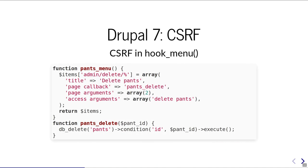We also have the same patterns for cross-site request forgery in Drupal 7. Routing is defined in hook_menu, and then you have some page callback which deletes something — pants in this example. We should also use confirmation forms here, same as in Drupal 8. We don't have automatic CSRF tokens in Drupal 7. If I want to validate a token, I would have to do this myself in the page callback — you can even find this token generating and validating code in Drupal 7 core.